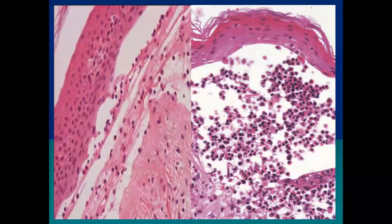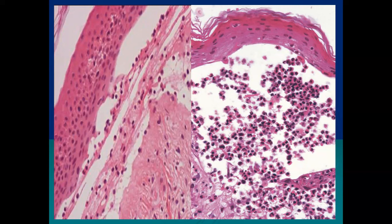Here we see a subepidermal blister — the whole epidermis is seen on the floor of the blister, the floor is formed by the dermis, and the predominant inflammatory infiltrate within the blister is eosinophils. If you see such an appearance in the exam, the first diagnosis is bullous pemphigoid. Other conditions associated with subepidermal blister and eosinophils are herpes gestationis and the inflammatory form of epidermolysis bullosa acquisita.